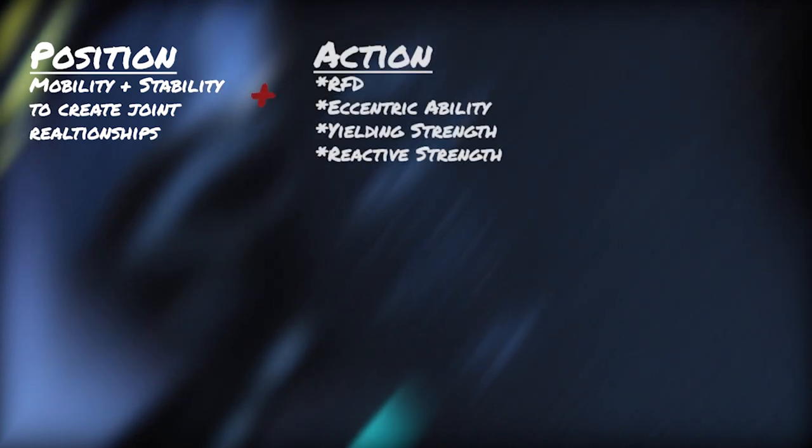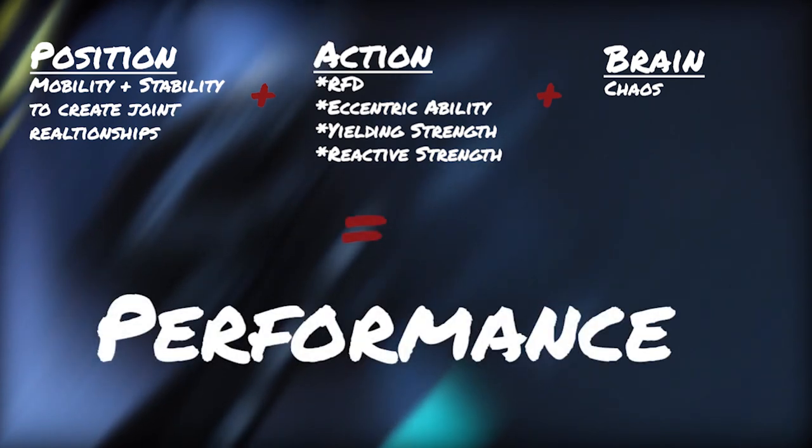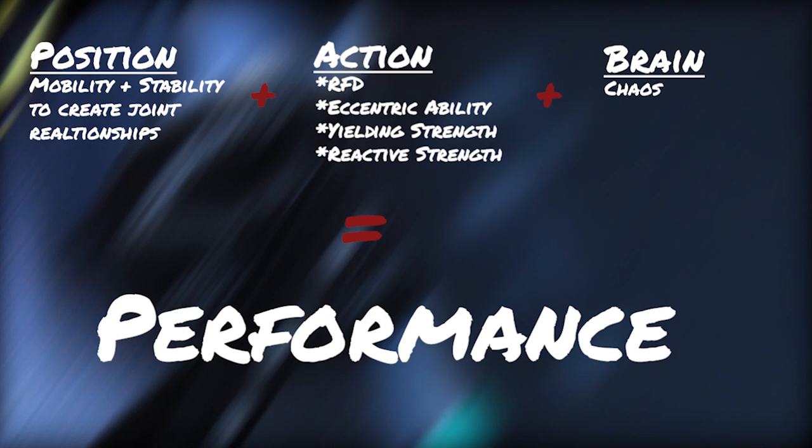We've got to look at position, which is the stability and mobility of joint relationships, the actions that muscles can create, rate force development, eccentric ability, yielding strength, reactive strength, and what happens when we add brain or chaos to that situation.